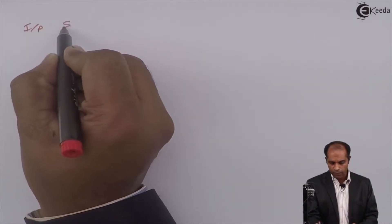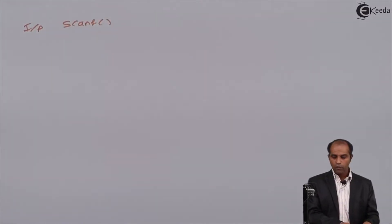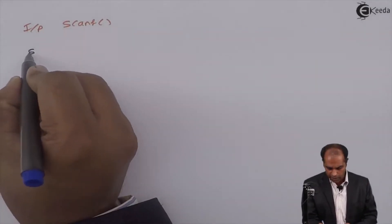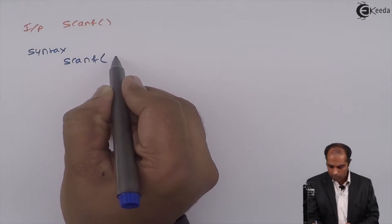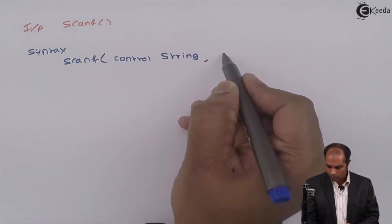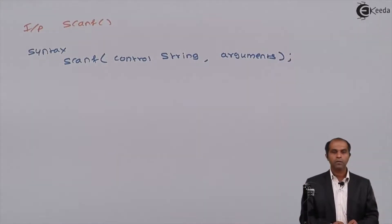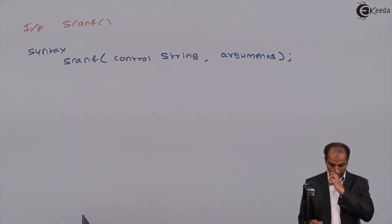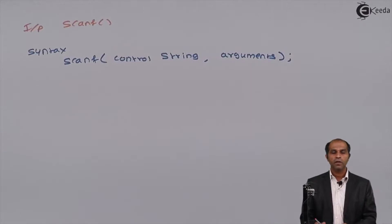Printf and scanf are called generalized or general IO functions. We can have characters, strings, integers, and float — all types of values can be operated with these functions. The input function for reading is scanf. The syntax of scanf has two parts: it has a control string and it has arguments. The instruction must always end with a semicolon.